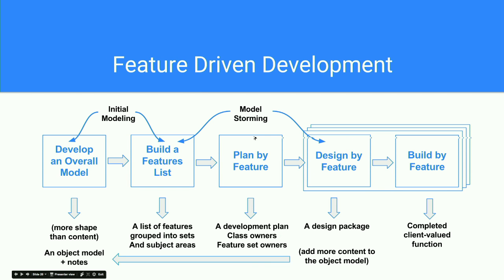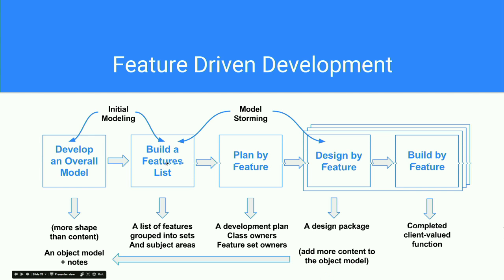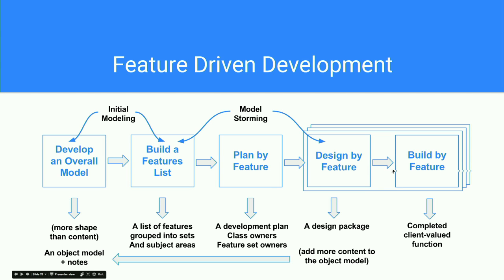Here is a simple diagram of feature-driven development and how it works. Initially, we develop an overall model and architecture-based framework. We build a feature list so that we can track everything on that basis. Once the feature list is done, we plan by feature — which features to include in which release cycle. Once planning is done, we go for design by feature — designing the feature architecture — and then build by feature.